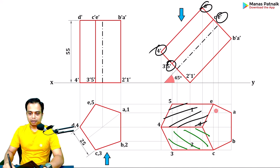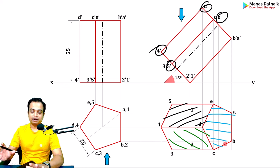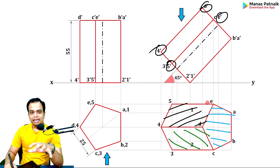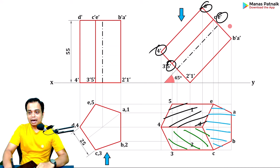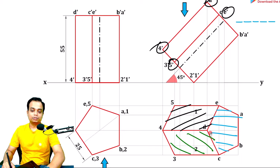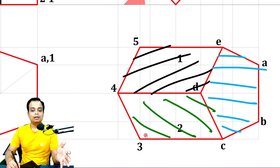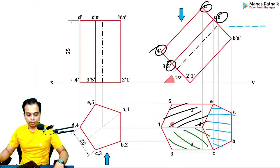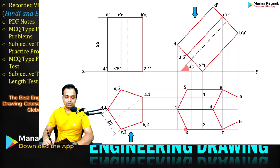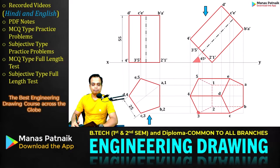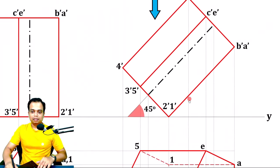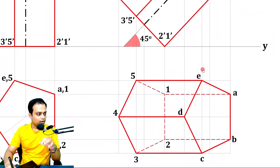Any edge that falls below a visible face is hidden and should be shown with dashed lines. I joined E with D and D with C, but I have not connected 3 with 2 because it is hidden below face 4-3-C-D. Now adding all hidden edges: 5-1, 1-2, 2-3 — these are all the hidden edges. That is the entire solution. That's the final front view and the final top view.